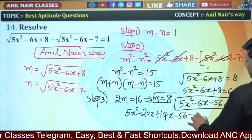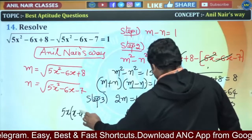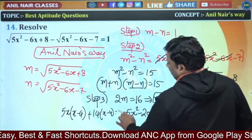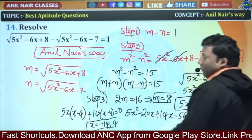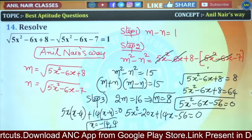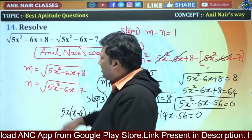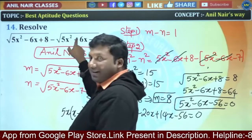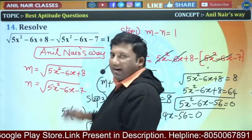5x²- 20x + 14x - 56 = 0 → 5x(x-4) + 14(x-4) = 0 → (5x+14)(x-4) = 0. Therefore x = -14/5 or x = 4. Very innovative way of solving this question! I considered this as m, this as n, m-n = 1, then squared to get m²-n².